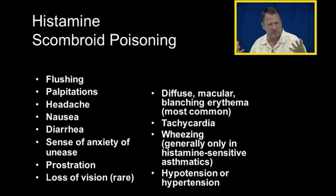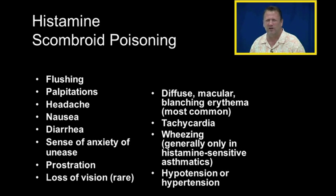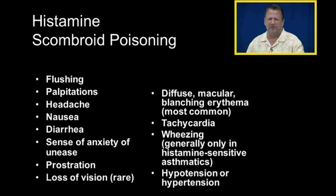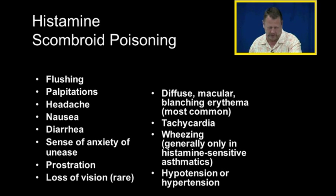Symptoms of scombroid poisoning include flushing caused by vasodilation, palpitations, headache, nausea, diarrhea, a sense of anxiety or unease, prostration (severe exhaustion), loss of vision, blanching, macular erythema (a type of allergic skin reaction), tachycardia, wheezing (especially in asthmatics), and either high or low blood pressure depending on the reflexes involved. These are the effects of excessive amounts of histamine.